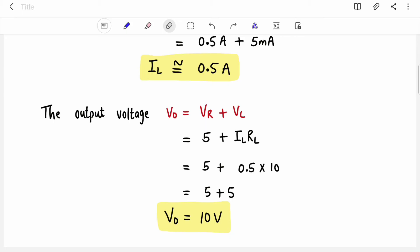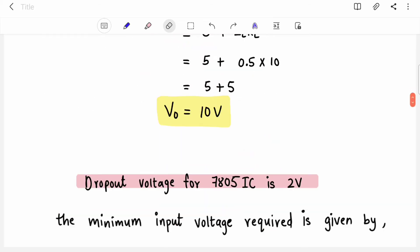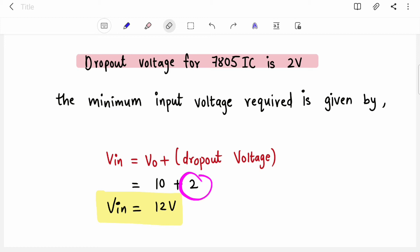Now if we try to find out output voltage which is VR plus VL. VR is 5. VL is IL into RL and just now we found out IL. So IL is 0.5 ampere and RL we assumed, so it becomes 10 volts. So our output voltage is 10 volts. Now we will just add 2 in it and it will give us minimum voltage required for 7805 for this current source. So these three important equations we will use and now we will solve the design numerical.